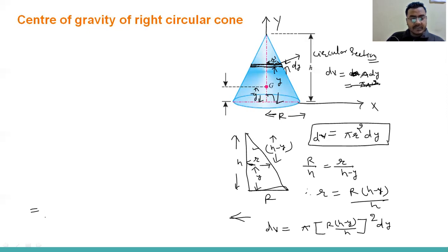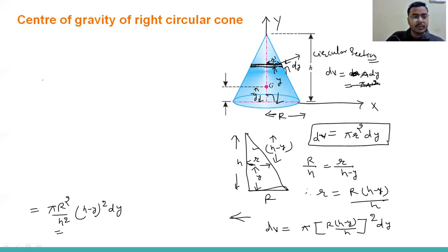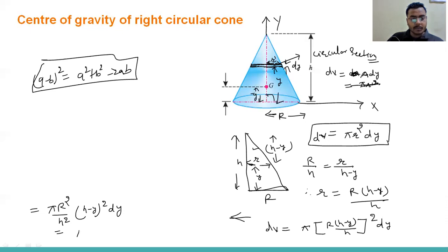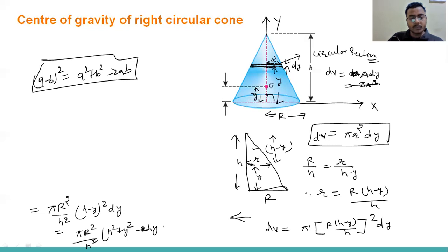Substituting into dV: dV equals pi·R²/h² into (h - y)² dy. Expanding (h - y)² using (a - b)² = a² + b² - 2ab, we get dV equals pi·R²/h² into (h² + y² - 2hy) dy.